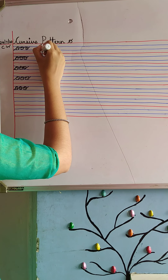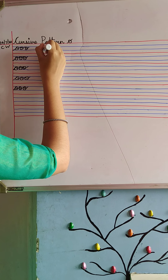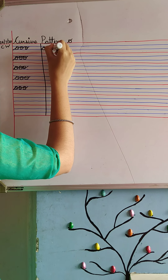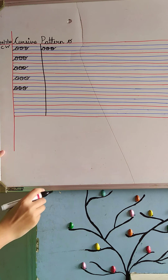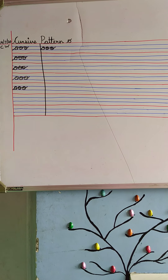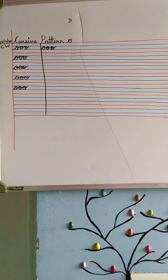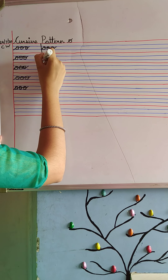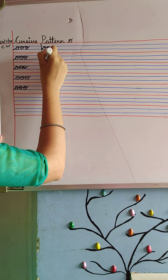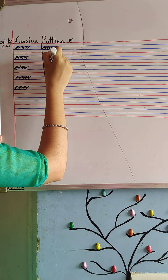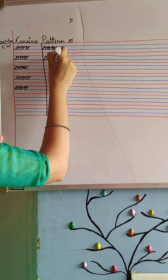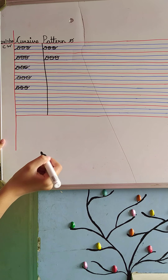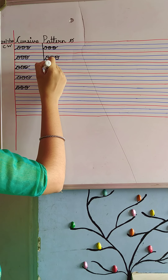O — second blue line, touching from the margin, three times. O for orange. Again, from the second blue line, we'll write O without leaving our hands. O for owl. Okay?